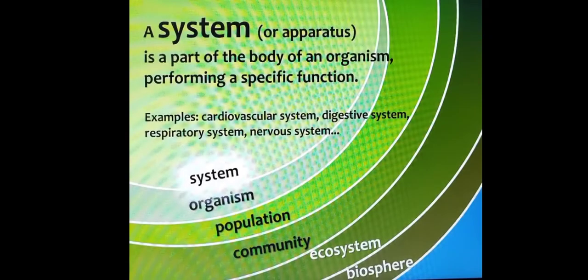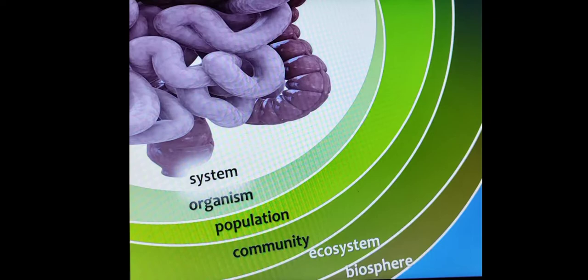Then system. A system is a part of the body of an organism which has a specific function. Cardiovascular system, digestive system, nervous system are different examples of systems. This is a part of the digestive system, a picture of the lower intestine.